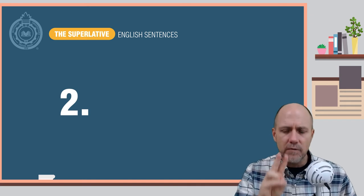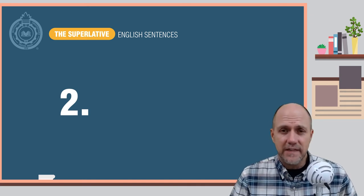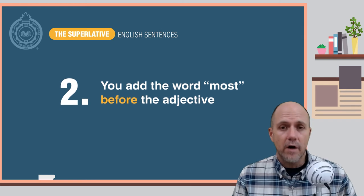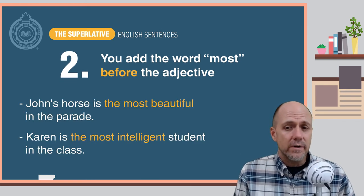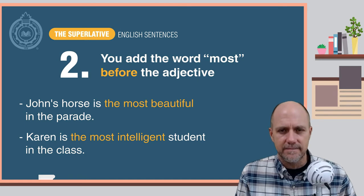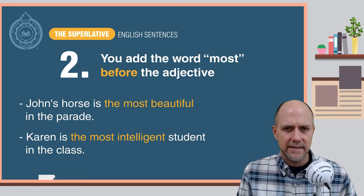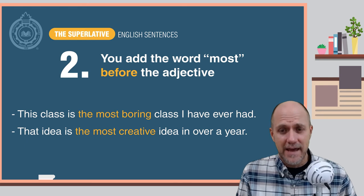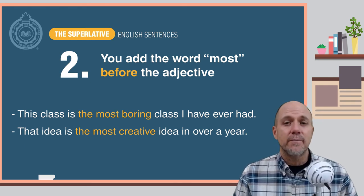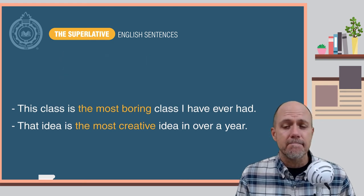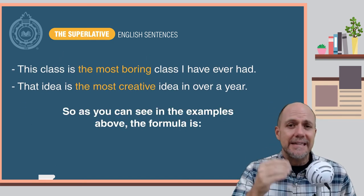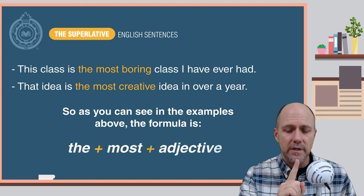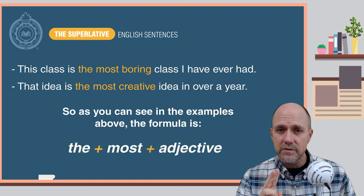The second way to form the superlative adjective in English is to add the word 'most' before the adjective. Here are some examples: 'John's horse is the most beautiful in the parade.' 'Karen is the most intelligent student in the class.' 'This class is the most boring class I have ever had.' 'That idea is the most creative idea in over a year.' The formula is: the + most + adjective.